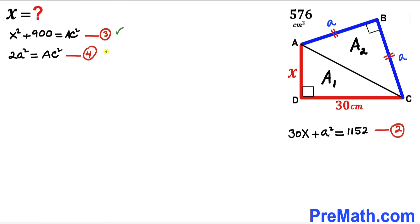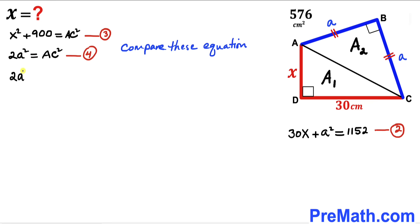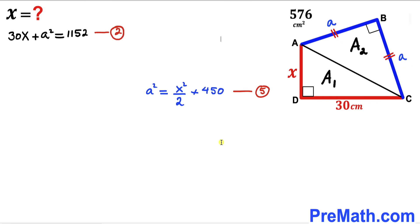Comparing equations 3 and 4, the right-hand sides are identical, so we equate the left-hand sides: 2a squared equals x squared plus 900. Dividing across by 2 gives us a squared equals x squared divided by 2 plus 450. We label this as equation 5.